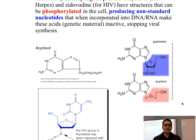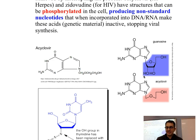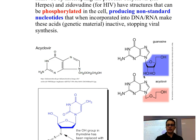Acyclovir in particular mimics the structure of guanosine, which is one of the bases in DNA. By doing this, it actually gets incorporated and stops the activity of the copied genetic material, thereby stopping the production of new copies of the virus.